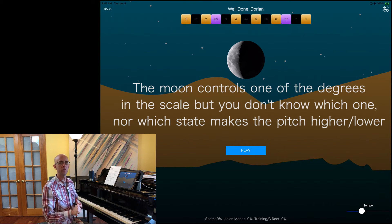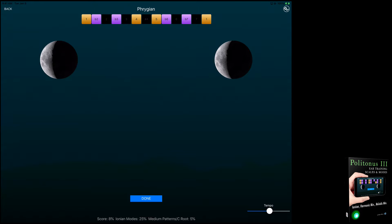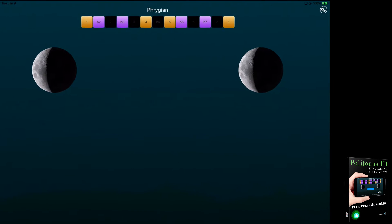Granted, yes, it's a 50-50 guess at this point because there's only one moon. As you level up, you'll have two and up to as many as three moons that will alter three random scale degrees in three random directions, either up or down. Now I'm in the medium patterns level which has two half moons.